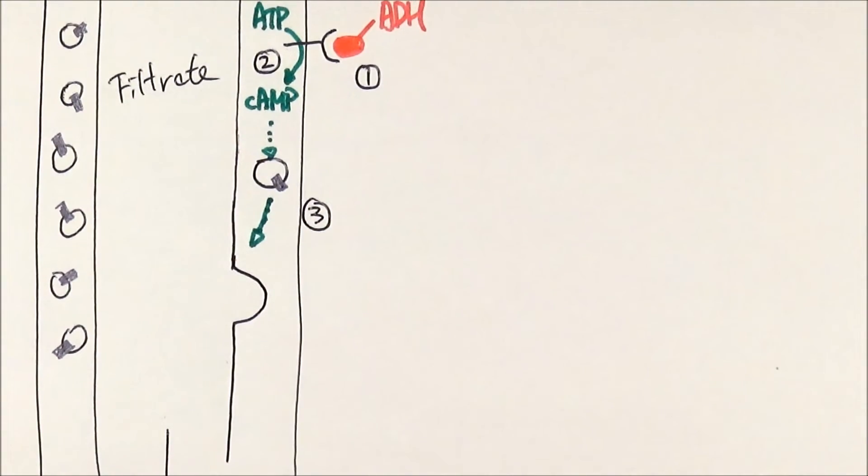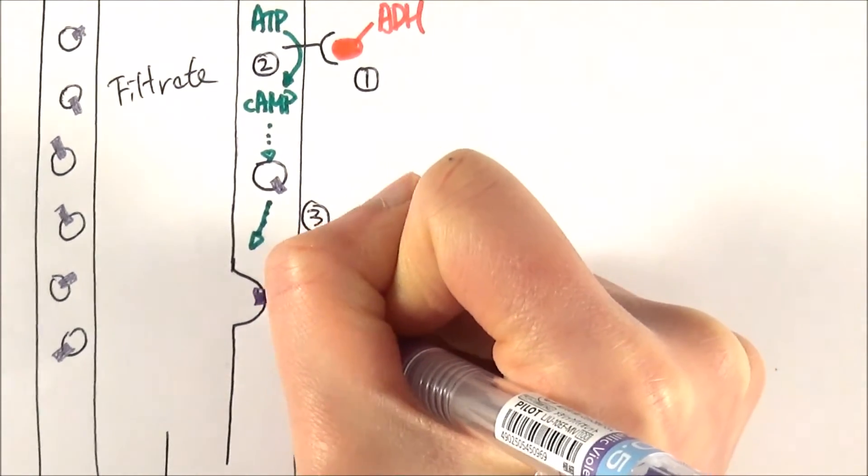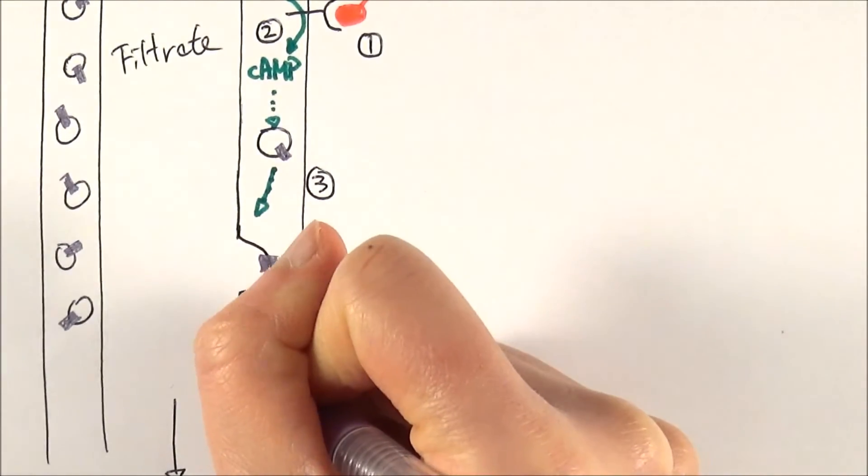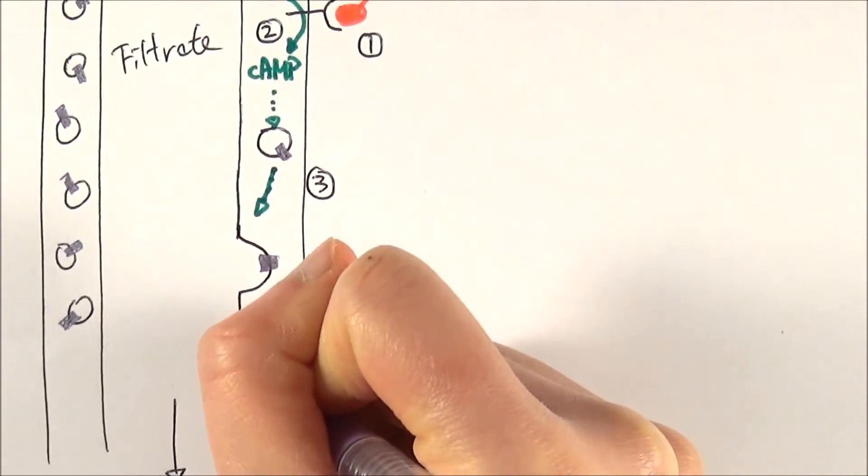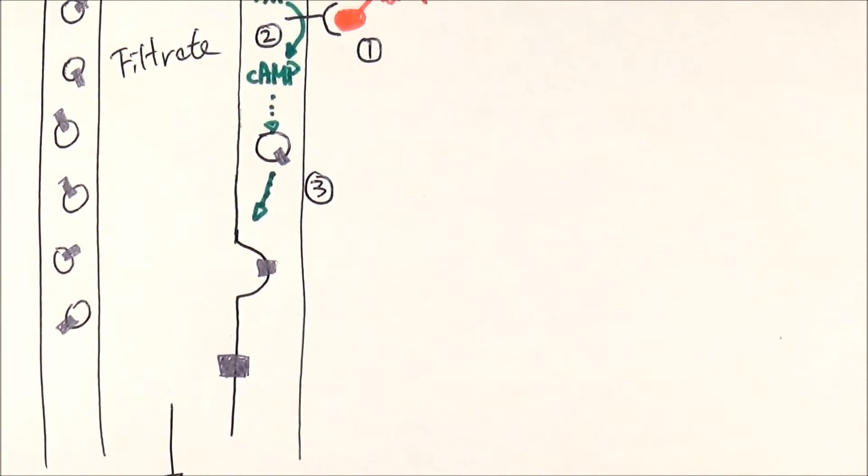So as it fuses with the plasma membrane, the aquaporin then actually goes like that. So in that case, and this is the fusion bit, and therefore finally it will get to this stage where it is completely deposited and inserted on the inner wall of the collecting duct.